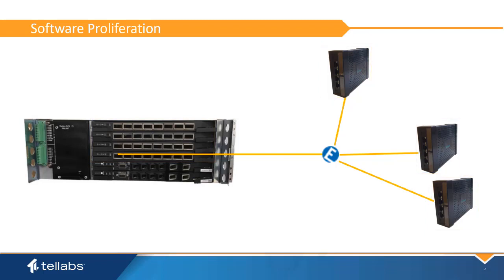The download process is not service affecting because each piece of the system has a dual memory bank. The system operates on the running version of software while downloading to a standby bank. When software is fully loaded in the standby bank, the system can then execute a software switch. The switch process is service affecting; however, downtime is controlled and minimal. When new hardware is added to the system, such as a PON card or ONT, the system will automatically perform this download and switch process to prepare the hardware for service.